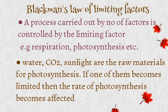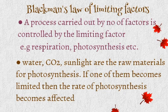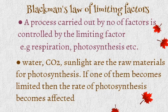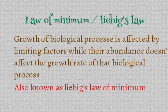Blackman's law of limiting factors was given by Blackman. According to this law, a biological process is carried out by a number of factors, but the process is regulated by the limiting factor. For example, plants require water, carbon dioxide, and sunlight to carry out photosynthesis. If one of them is present in a very low amount, it will affect the rate of photosynthesis. So if carbon dioxide is present in very low amount, it will affect the rate of photosynthesis.